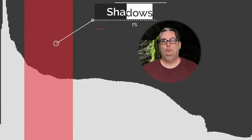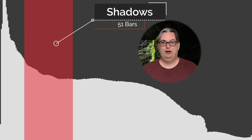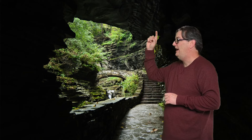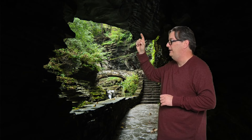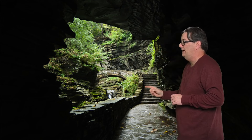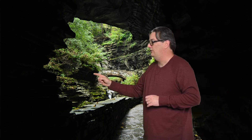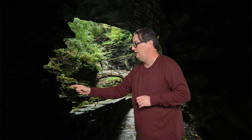The blacks are followed by what is known as the shadows, which includes 51 bars. We have some lighter shades of black — or shadows — on the inside of the cave, on the steps, and in different parts of the image. Those are all shadows.